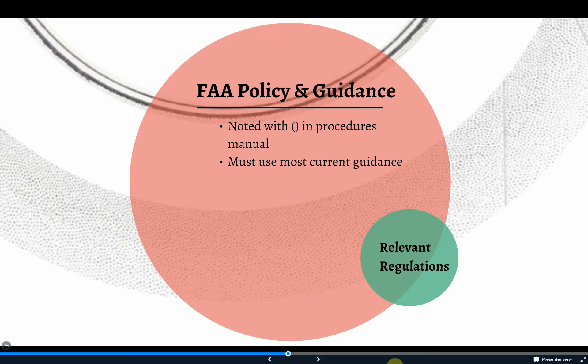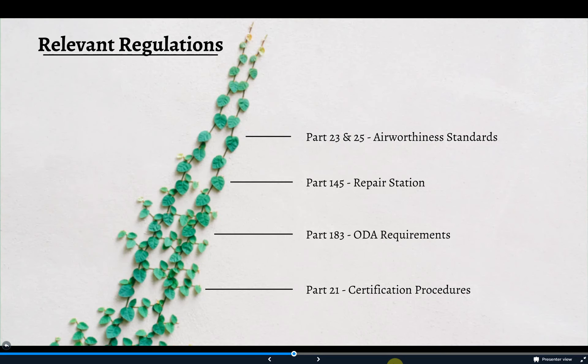The expectation is that all projects are conducted in line with the appropriate regulations, policy, and guidance that's available. The primary regulations applicable to Westar's work are Part 21 for certification processes, Part 23 and 25 airworthiness standards for small and transport aircraft, Part 145 for the repair station, and Part 183 as it relates to the ODA. All of these regulations are online, though Westar often has working copies in their reference library.